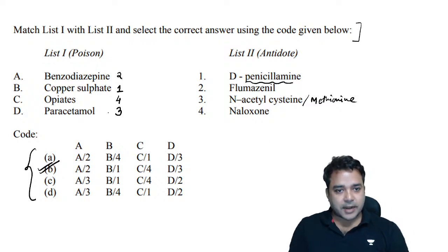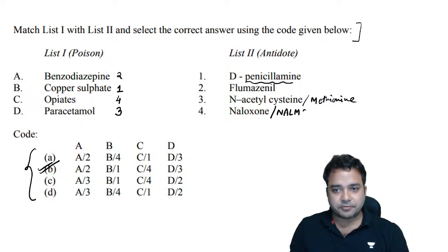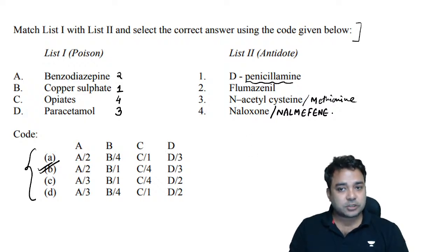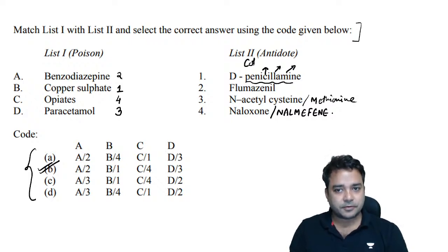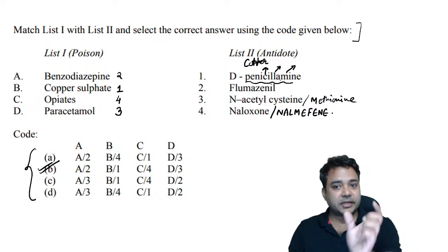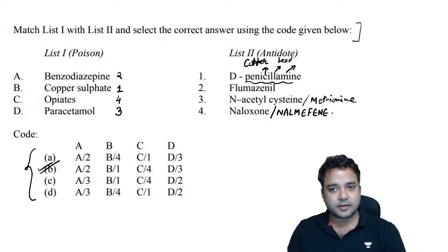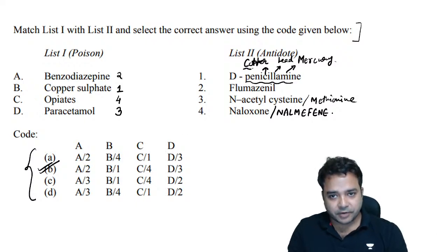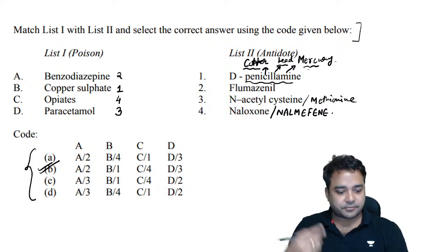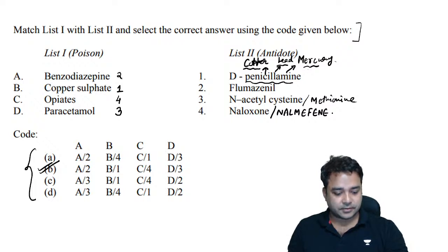Antidote for opioid poisoning is naloxone, or you can get nalmefene in the option. Naltrexone is used orally for maintenance of opium poisoning cases. Penicillamine — the word itself contains clues: C for copper, L for lead, and M for mercury. So penicillamine acts as a chelator for copper, lead, and mercury poisoning.